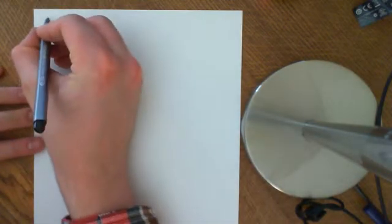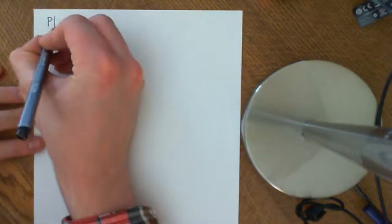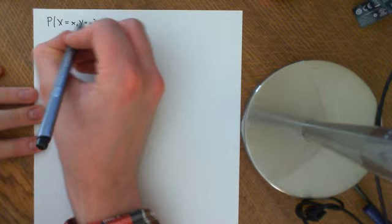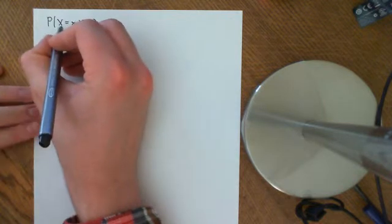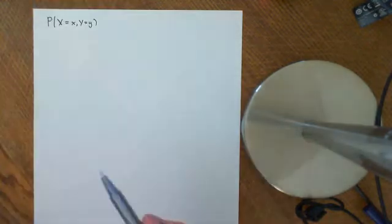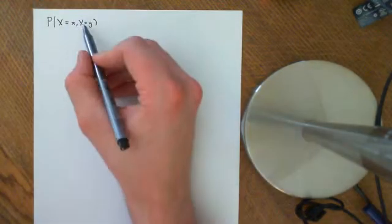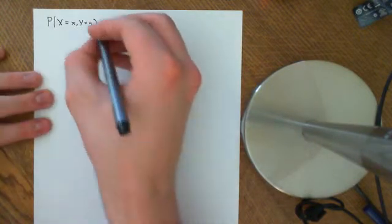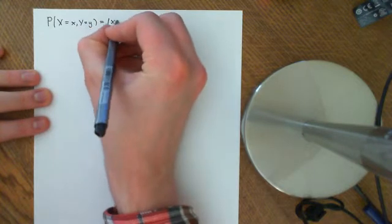Welcome to the final video on this problem involving the chicken and her eggs hatching. In the previous video, what we calculated was that the joint probability mass function — that big X equals little x and big Y equals little y — where big X is the random variable for how many eggs hatch, and big Y is how many eggs did not hatch, is equal to (x+y choose x) times P^x times Q^y.